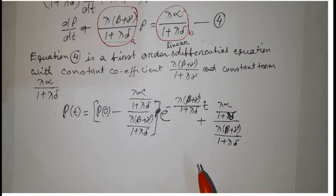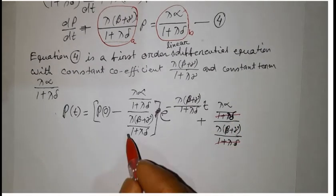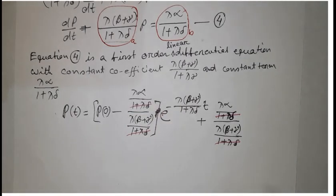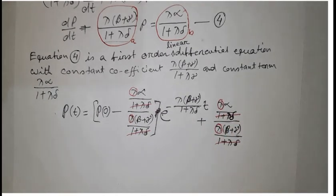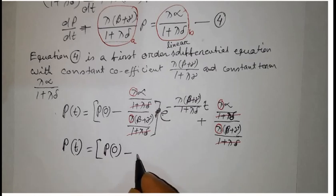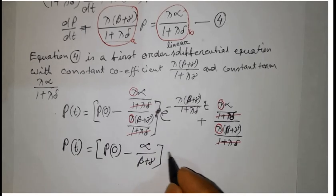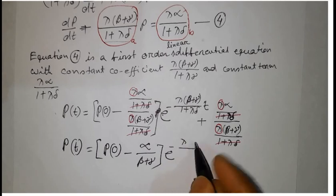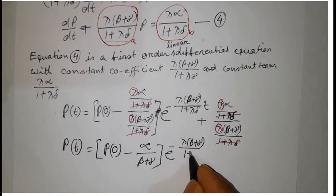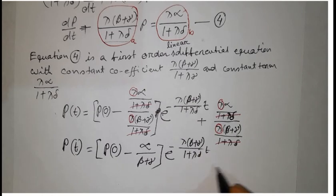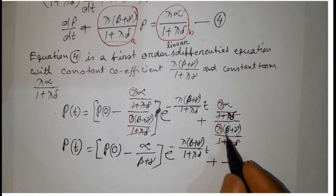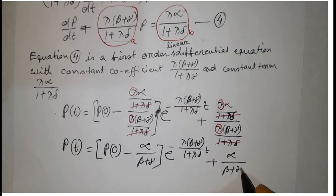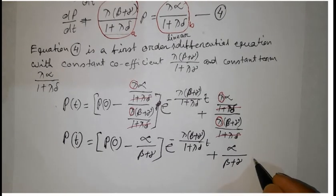After cancellation — lambda·delta terms cancel, and the (1 plus lambda·delta) terms cancel — we finally get P(t) equal to (P_0 minus alpha/(beta plus gamma))·e^(minus lambda·(beta plus gamma)/(1 plus lambda·delta)·t) plus alpha/(beta plus gamma). This is equation number 5.